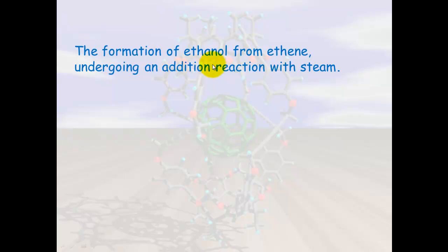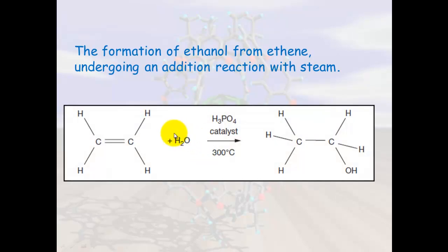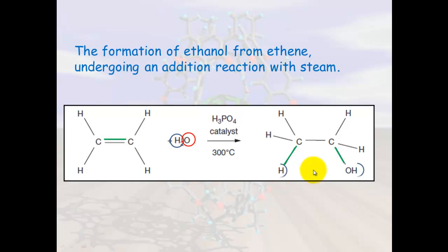Another example is the formation of ethanol from ethene undergoing an addition reaction with steam. Steam is water, and the double bond in ethene breaks open. The hydrogen and oxygen from water are added across the double bond to form ethanol.